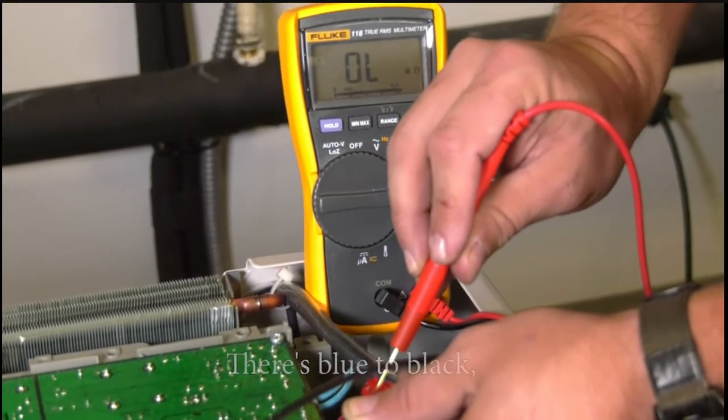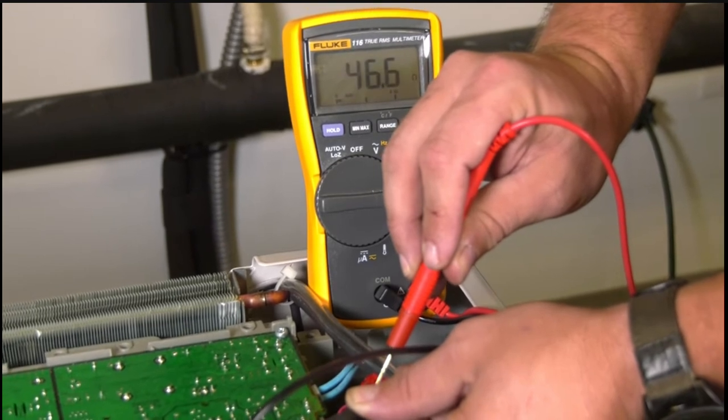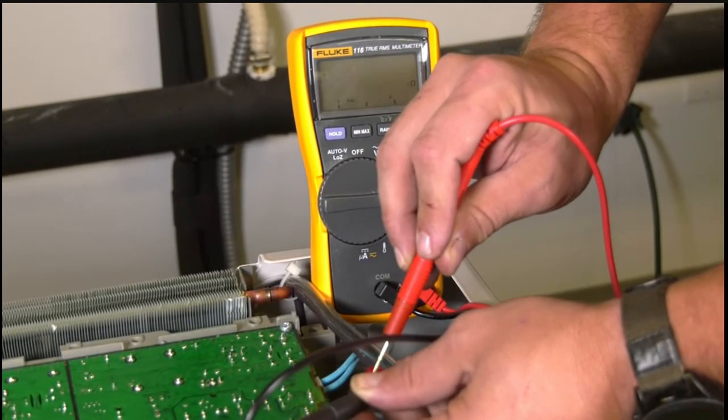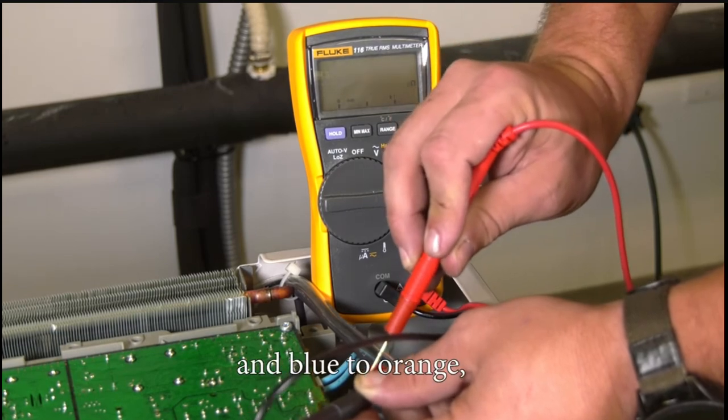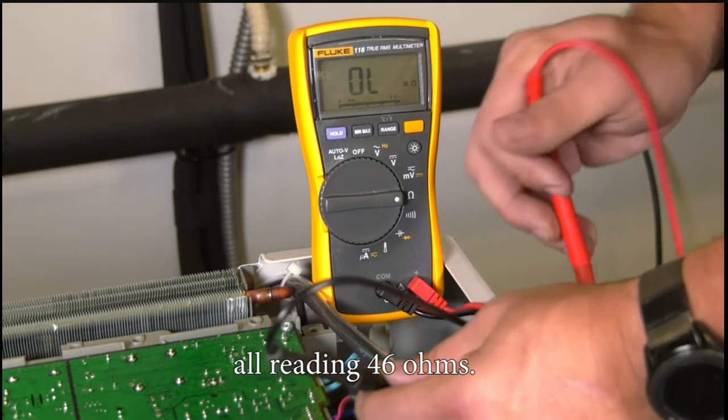There's blue to black, blue to yellow, blue to red, and blue to orange, all reading 46 ohms.